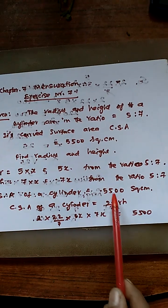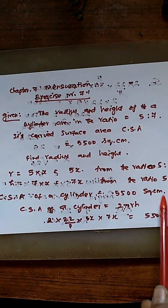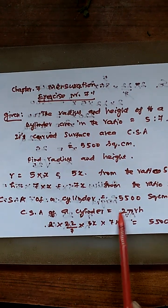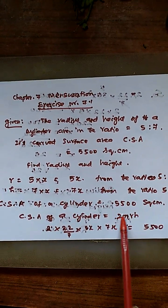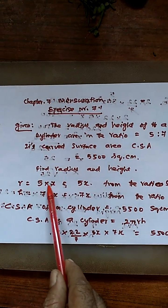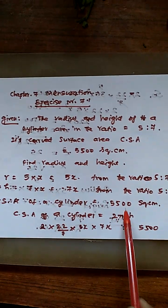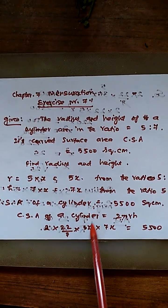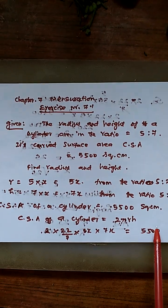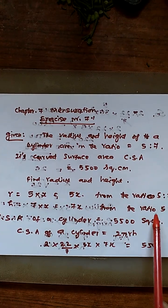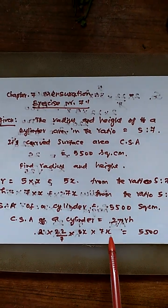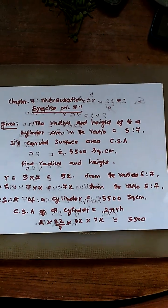CSA of cylinder is 5,500 square centimeters. The CSA formula is 2 times pi times R times H, where pi equals 22 by 7. Substituting the formula: 2 into 22 by 7 into 5X into 7X equals 5,500.